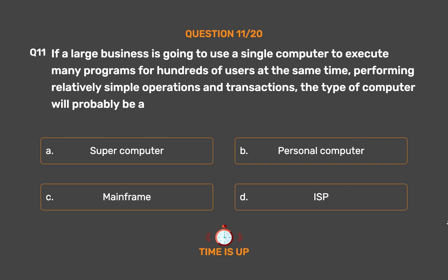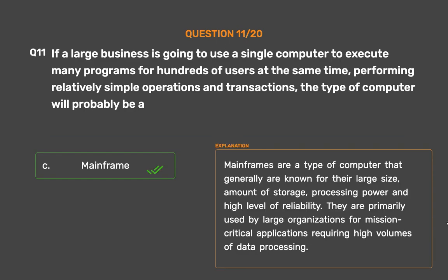The correct answer is Option C: Mainframe. Mainframes are a type of computer generally known for their large size, amount of storage, processing power and high level of reliability. They are primarily used by large organizations for mission-critical applications requiring high volumes of data processing.